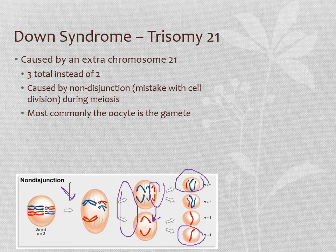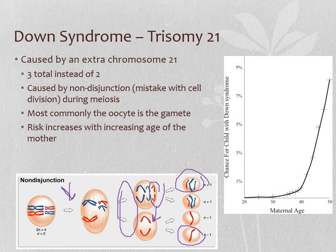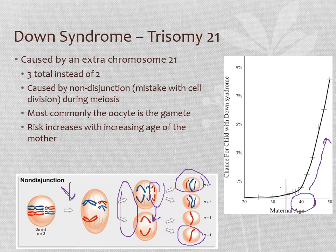It is almost always the oocyte, not the sperm, that carries the extra chromosome 21. This is because female-bodied people are born with all the oocytes they will ever have, and those oocytes sit dormant until they're called upon to mature. Male-bodied people, by contrast, make new gametes continuously. The older a female-bodied person is, the higher the risk of this meiotic error occurring. By age 40, there is an exponential rise in the likelihood of having a child with Down syndrome, with the inflection point beginning around age 35.